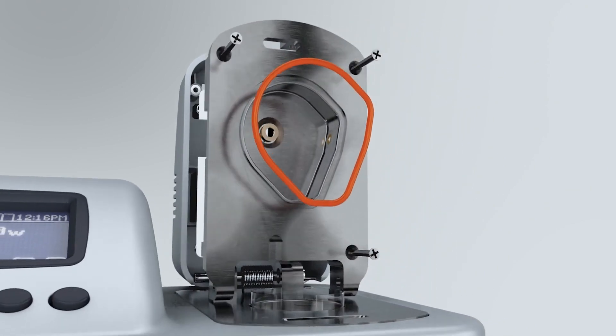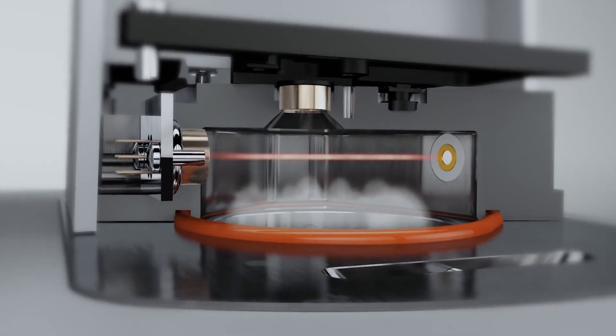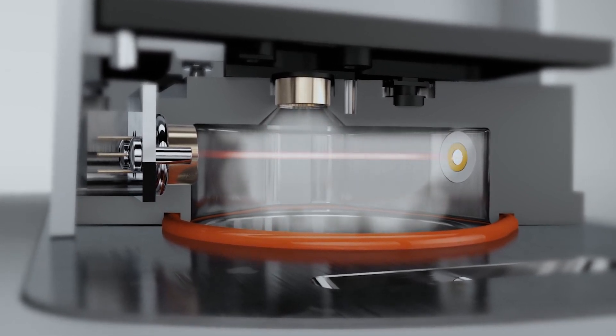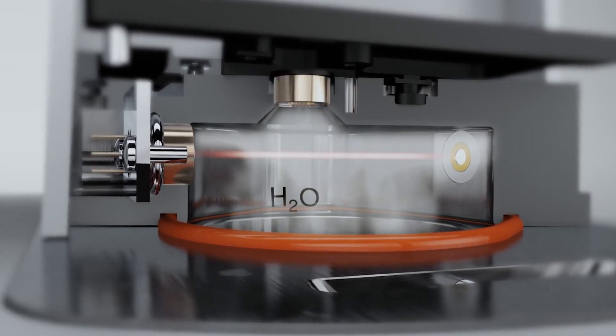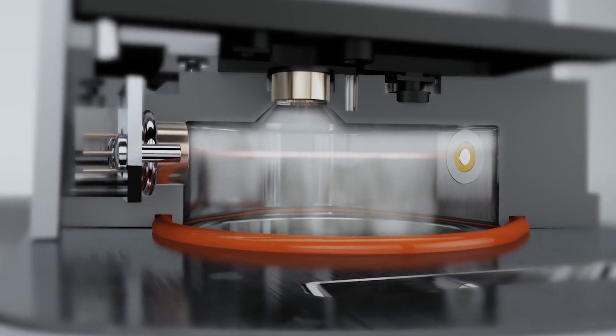When a sample is put into the chamber and the block is sealed, it comes to vapor equilibrium. Water molecules enter the air above the sample. The TDL sensor measures the relative humidity of the air in the sample chamber by emitting a finely tuned infrared laser beam across the headspace above the sample.